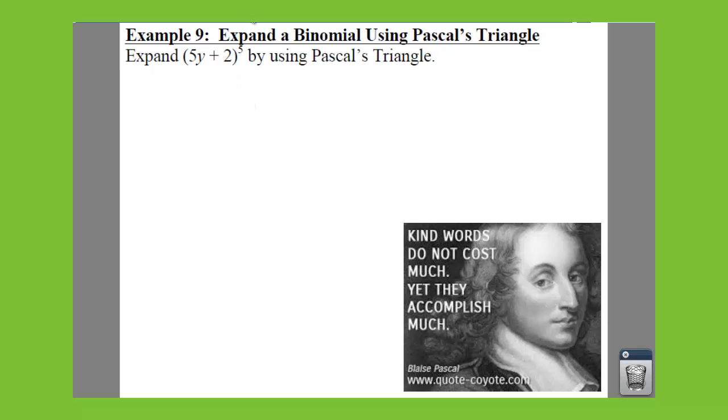So what we need to do is figure out our fifth row. Your fifth row of numbers, remember that's going to give you six terms. So we're going to start with a 1, and then you're going to have a 5, 10, 10, 5, 1.